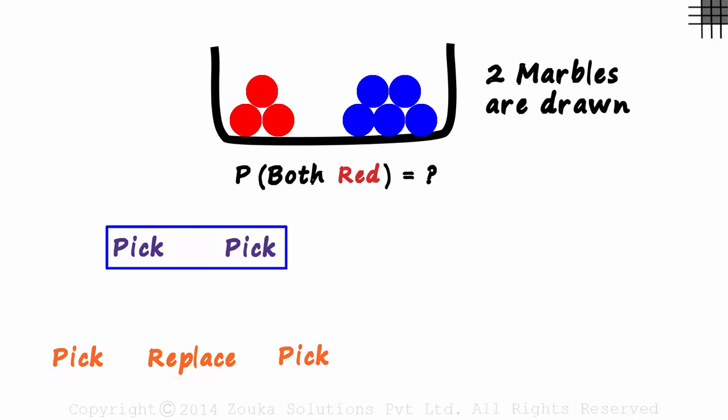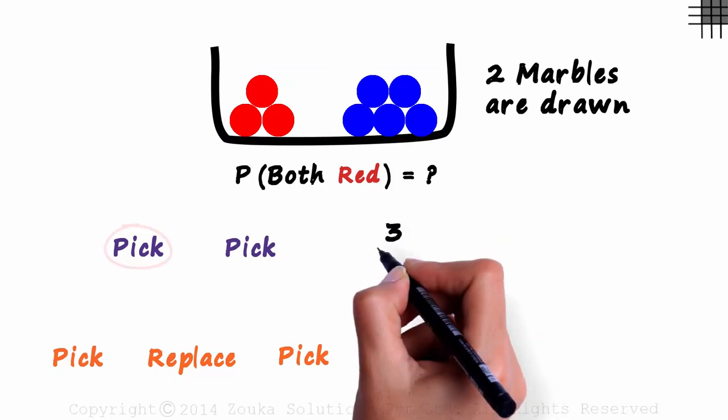Let's understand the first one. We pick one marble first. What is the probability that it is red? There are three red marbles and a total of eight marbles. So the probability of the first marble picked being red will be 3 over 8.